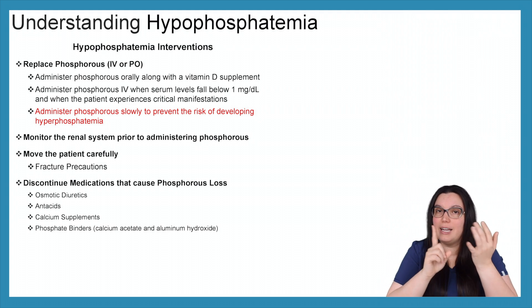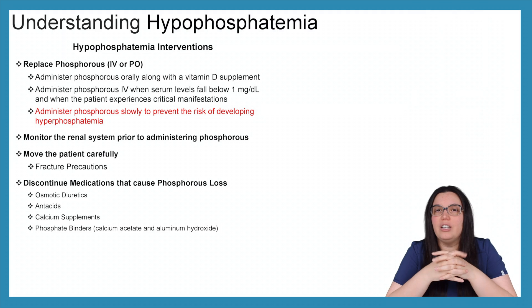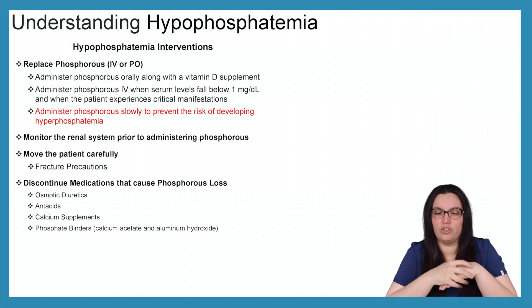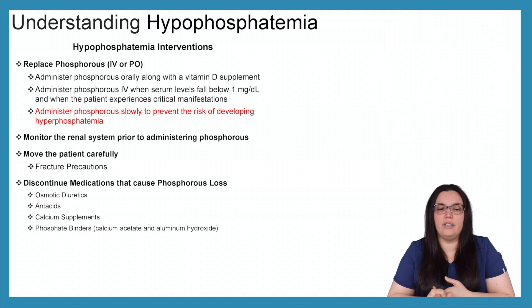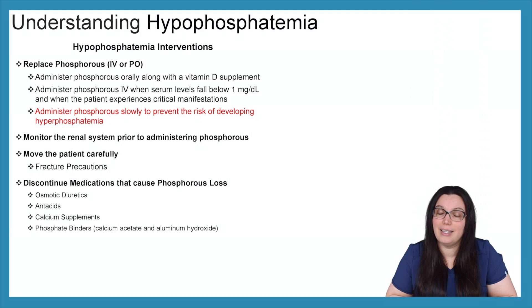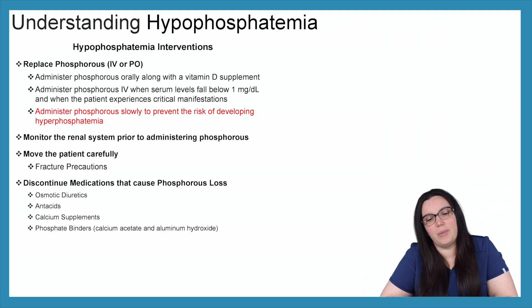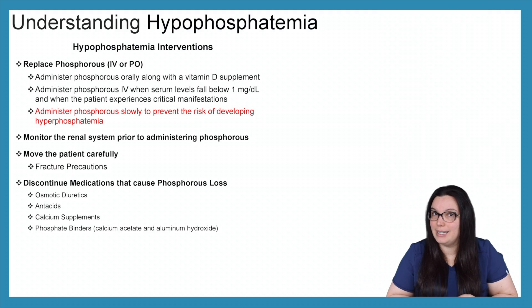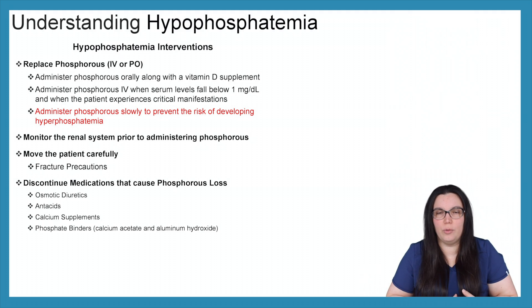If the level is below 1 milligram per deciliter and the patient is experiencing critical manifestations, we give phosphorus IV to correct it — but we don't want to correct it too much and send them in the opposite direction. We want to monitor our renal system prior to administering phosphorus. We want to move the patient carefully, because fractures can occur with these low phosphorus levels. And we want to discontinue medications that cause phosphorus loss: osmotic diuretics, antacids, calcium supplements, and phosphate binders like calcium acetate and aluminum hydroxide.